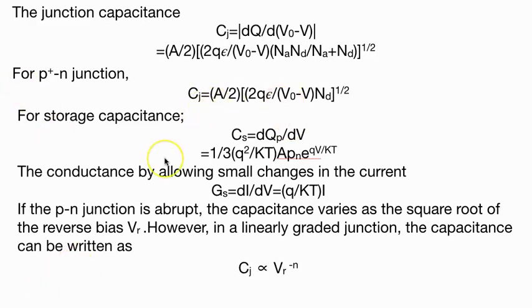Capacitance in forward or reverse bias condition: junction capacitance is A/2 square root of 2Qε/(V_0 - V) into N_D.